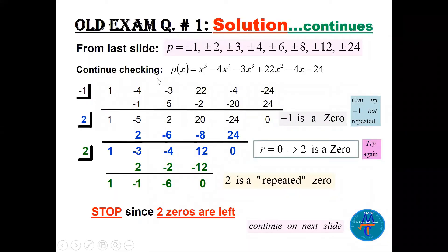Continuing with the possible rational zeros, we try x=-1. Bring 1 down, multiply by -1, add to get -5, continue until the remainder is 0 — so x=-1 is a zero. As mentioned, if you find a zero, try it again, but it is not repeated here. Now try x=2: bring 1 down, 1 times 2 is 2, add to get -3, multiply, continue until the remainder is 0, so x=2 is a zero.